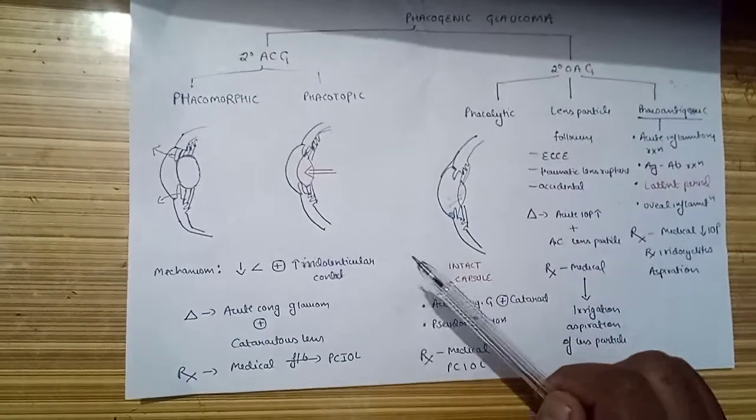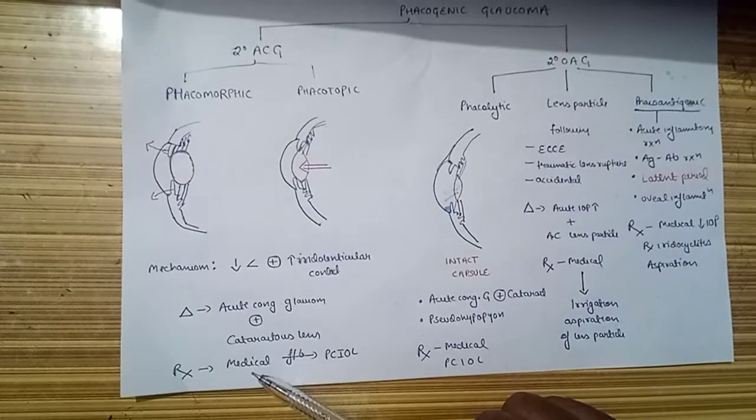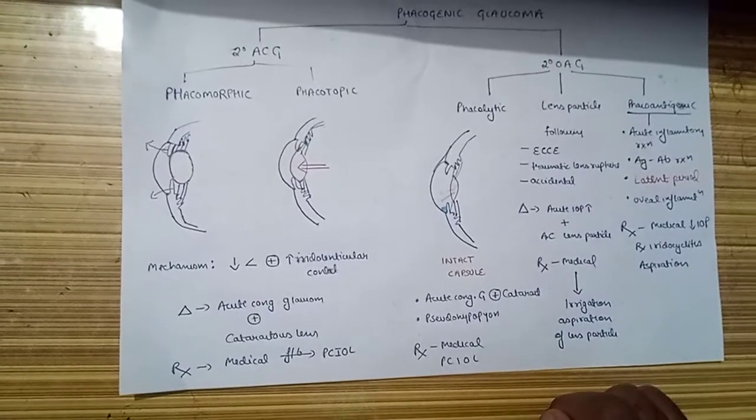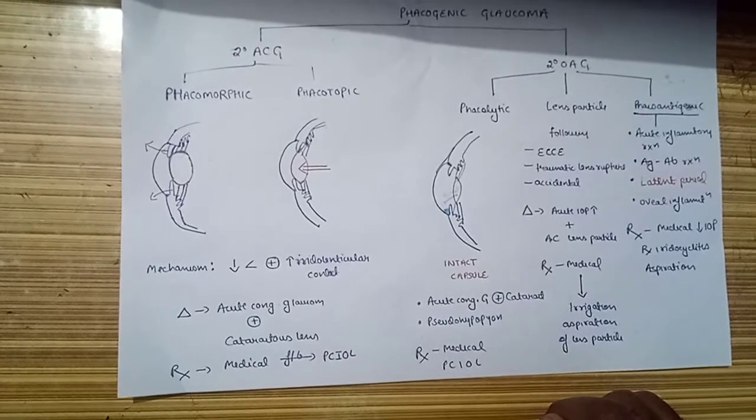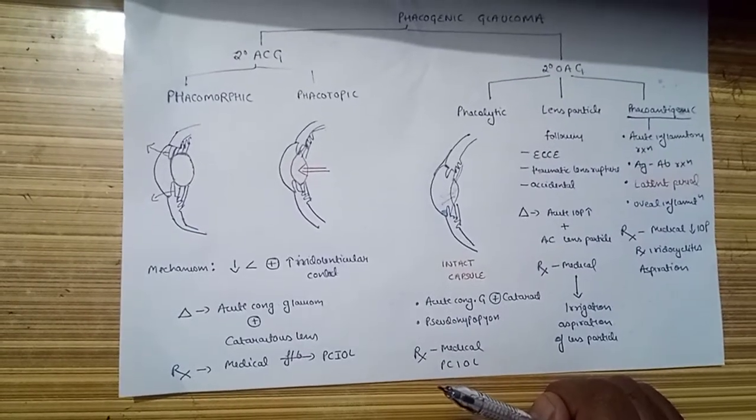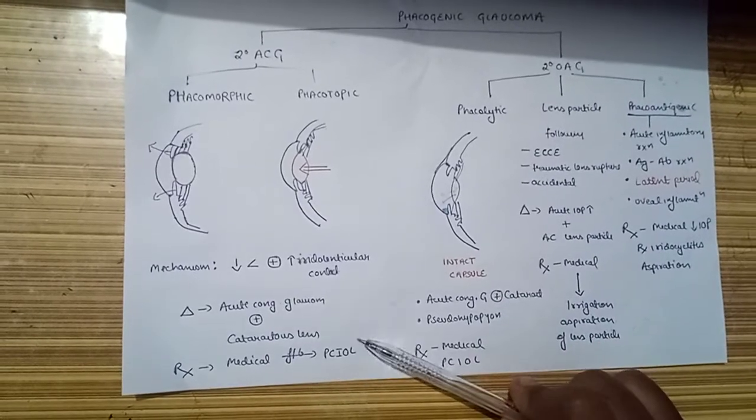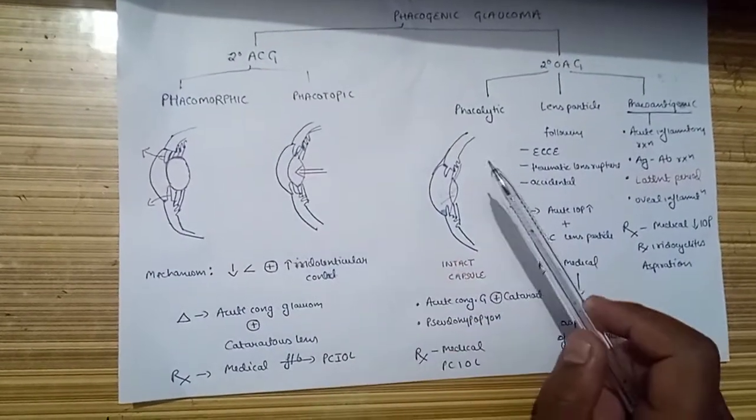Treatment: we go for medical treatment initially for management of IOP, and once the eye is at rest, we go for posterior chamber IOL implantation. These two are the main causes of angle closure glaucoma.